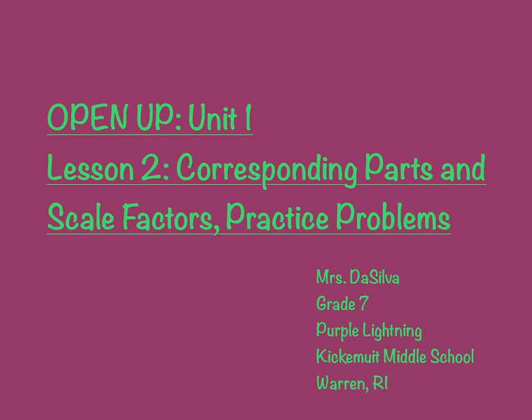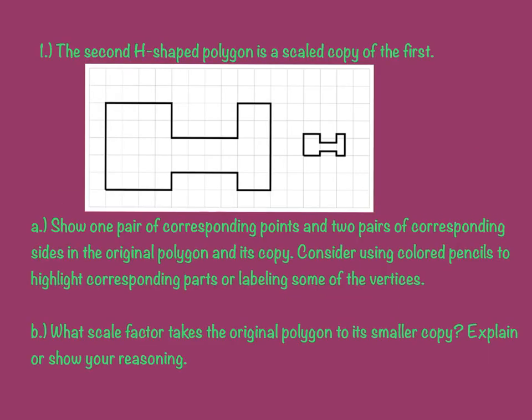Okay, so today we're going to be going over the practice problems from Lesson 2, and of course we're talking about corresponding parts and scale factors. So here we have this H-shaped polygon and the scaled copy. We have to show one pair of corresponding points and two pairs of corresponding sides in the original and its copy.